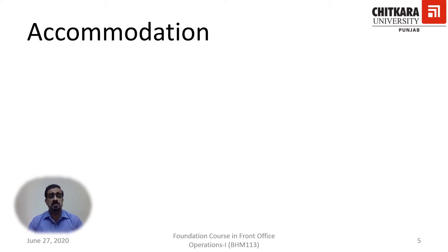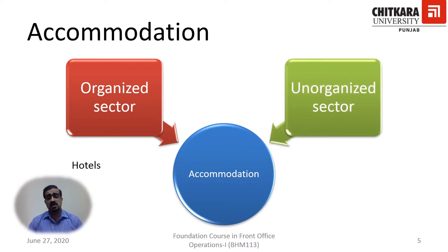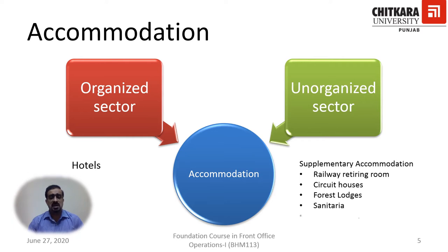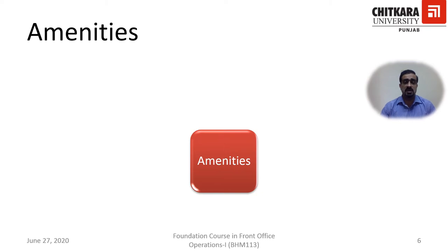Accommodation is a very important pillar of tourism because this is where the hospitality or hotel industry lies. Accommodation is classified into the organized sector, like hotels, and the unorganized sector, like supplementary accommodation. Supplementary accommodation refers to accommodation for tourists but not in a luxurious or organized setup like a hotel — for example, retiring rooms for railway passengers, circuit houses, forest lodges, sanitaria, and hospices.